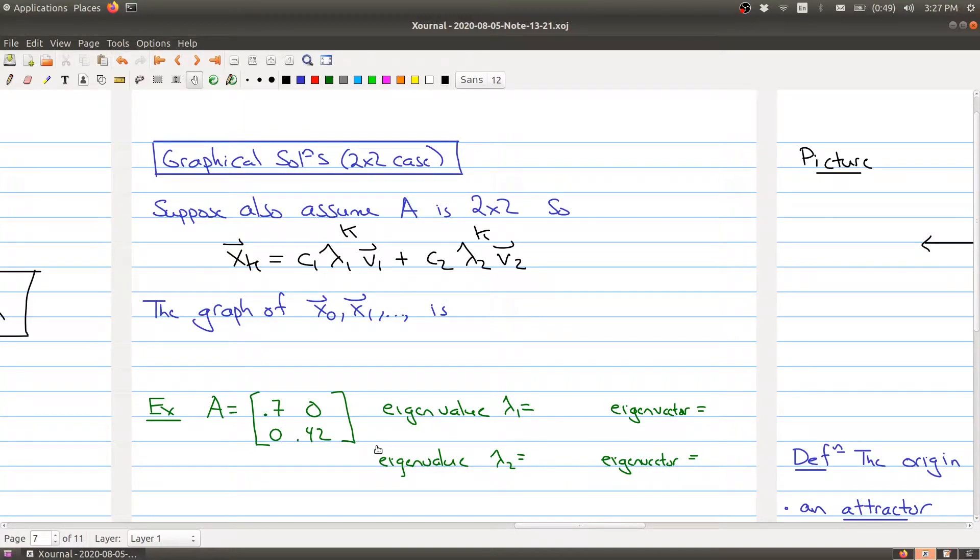So in this last part of today's lecture, what I want to do is focus a little bit more on the two by two case. In this case, we can start drawing some pictures because each vector can be represented by a point in the plane. So we'll assume that A is two by two, and we're going to continue to assume that A is diagonalizable and we know its eigenvalues and eigenvectors.